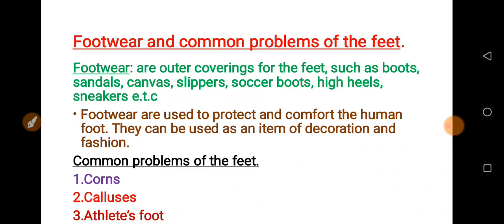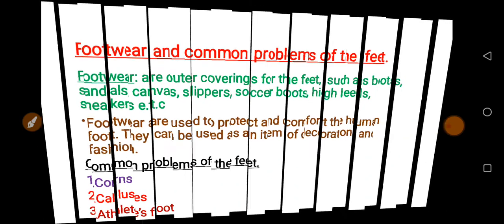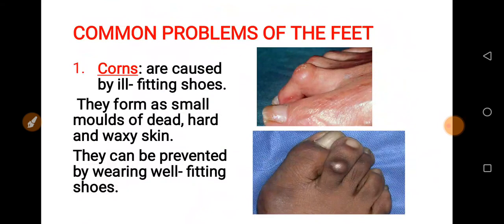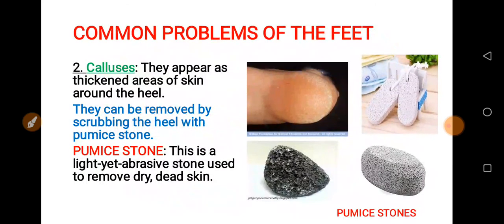Week 6, we discussed about footwear and common problems of the feet. Footwear are outer coverings for the feet, as you can see the examples on the screen. Common problems of the feet include corns, which are caused by ill-fitting shoes and can be prevented by wearing well-fitting shoes. Calluses appear as thickening areas of skin around the heel, and can be prevented by scrubbing the heel with pumice stones — this is the local type, and this is the modern type of pumice stone.